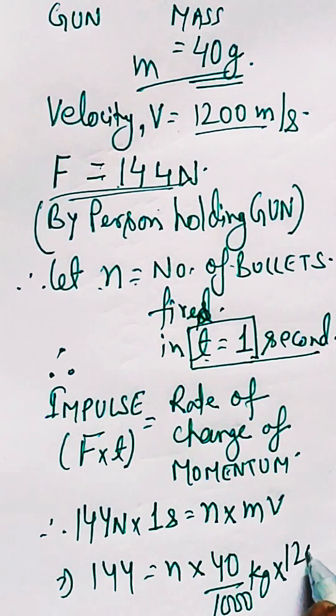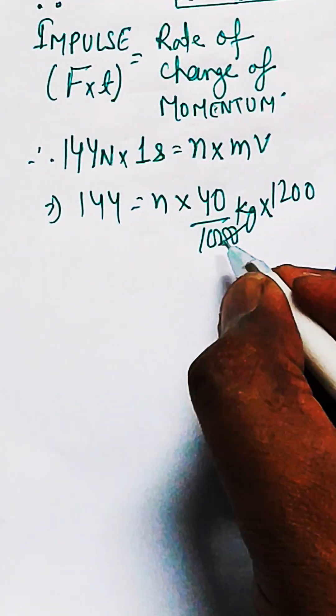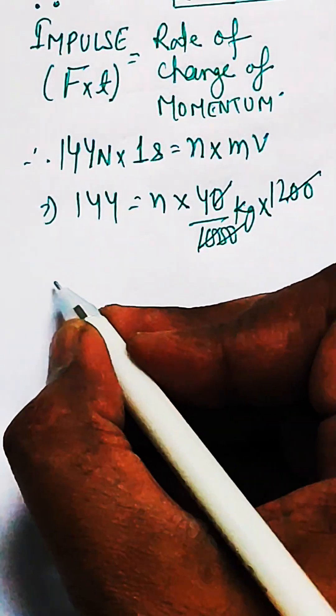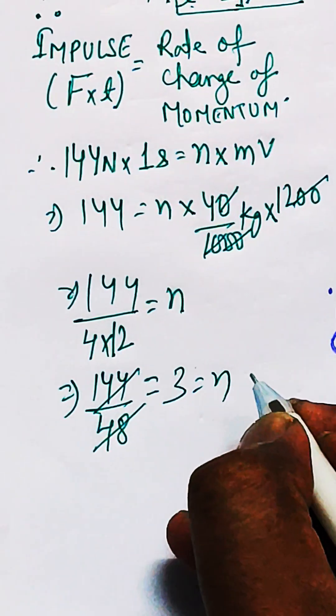When you solve it, you get the value of n as 3. So 3 bullets will be fired per second.